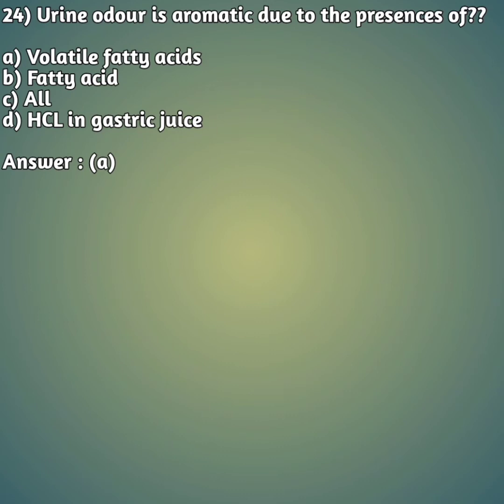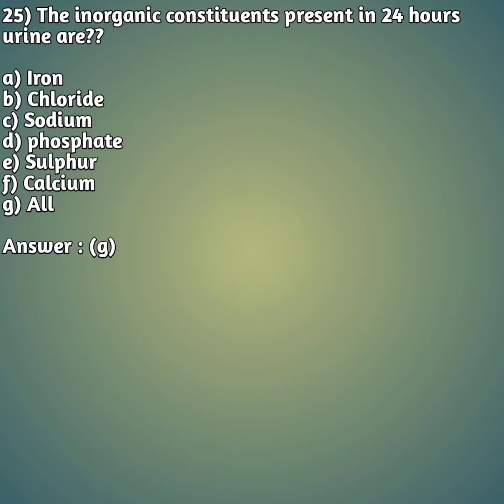Question 24: Urine odor is aromatic due to the presence of — option A: volatile fatty acid, option B: fatty acid, option C: all, option D: HCL in gastric juice. The right answer is option A — because of volatile fatty acids, urine odor is aromatic.